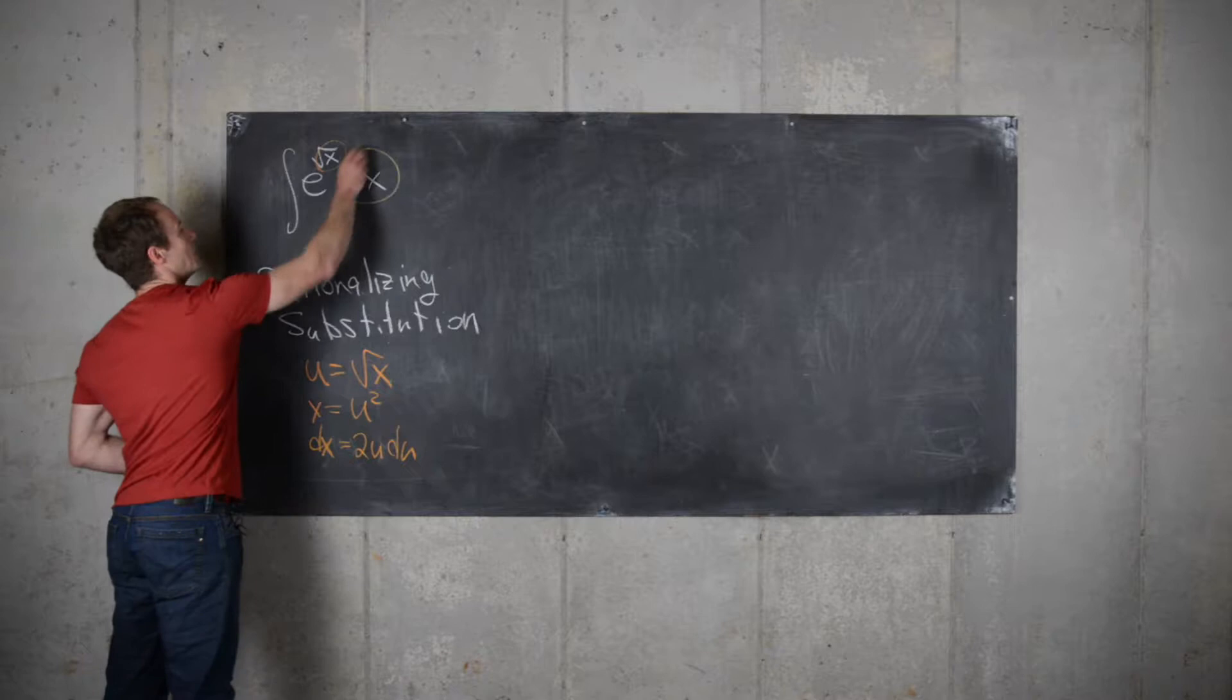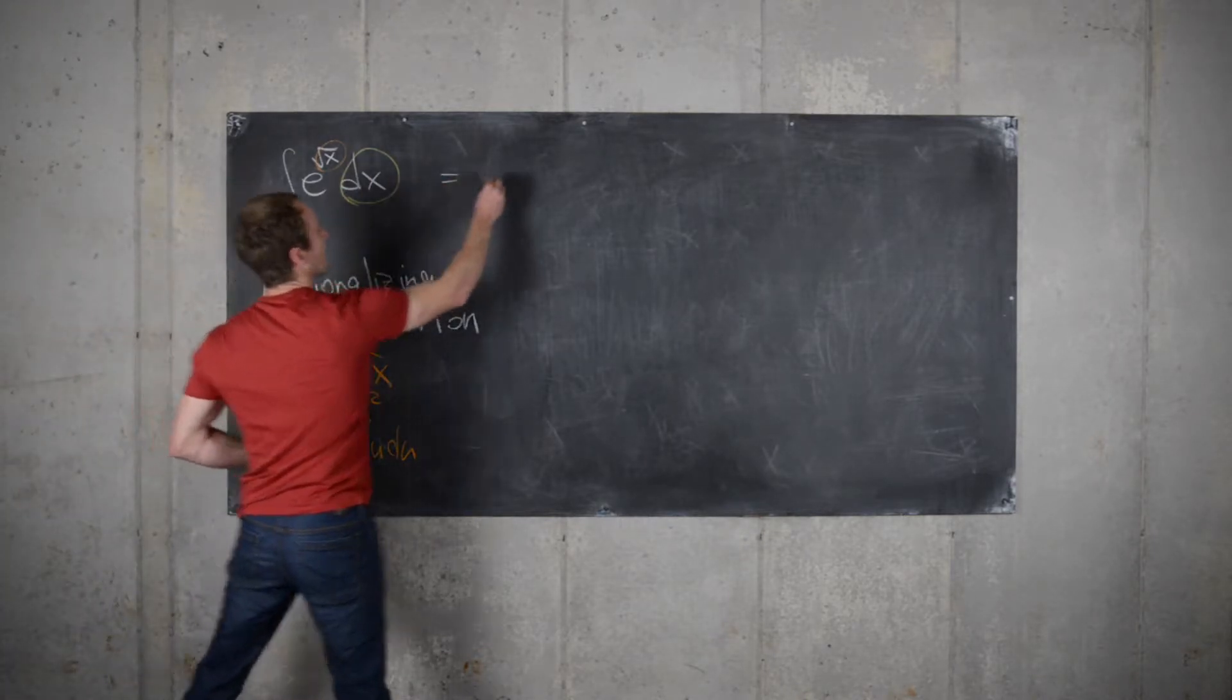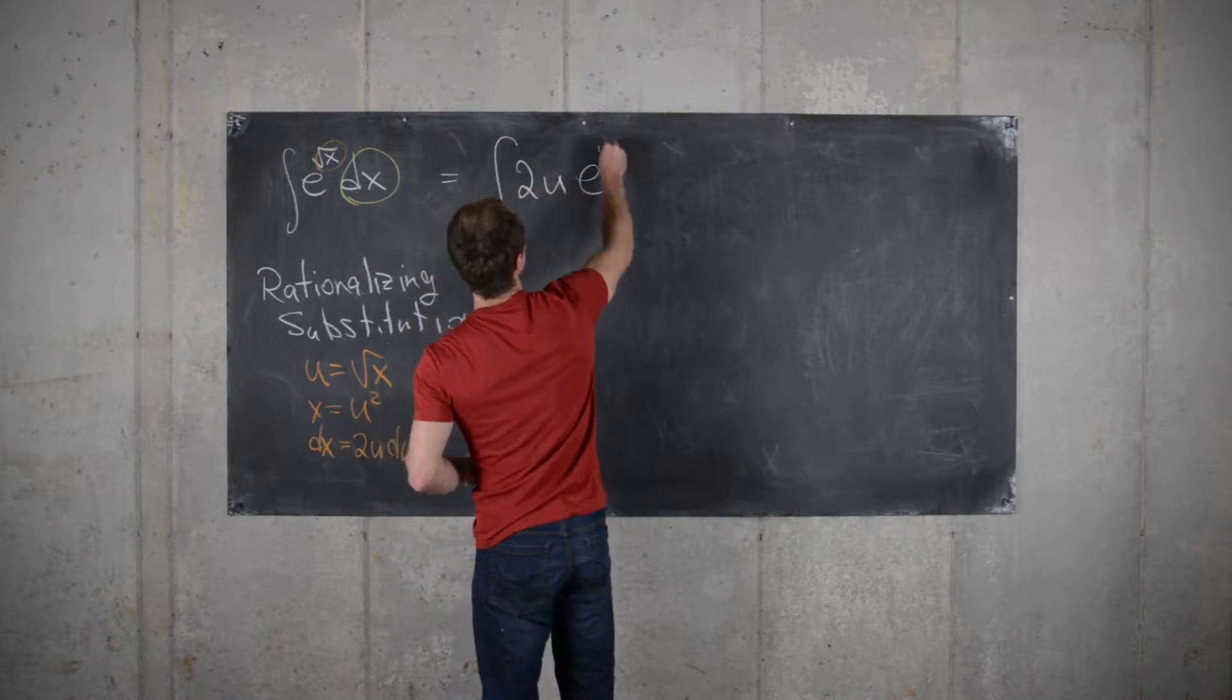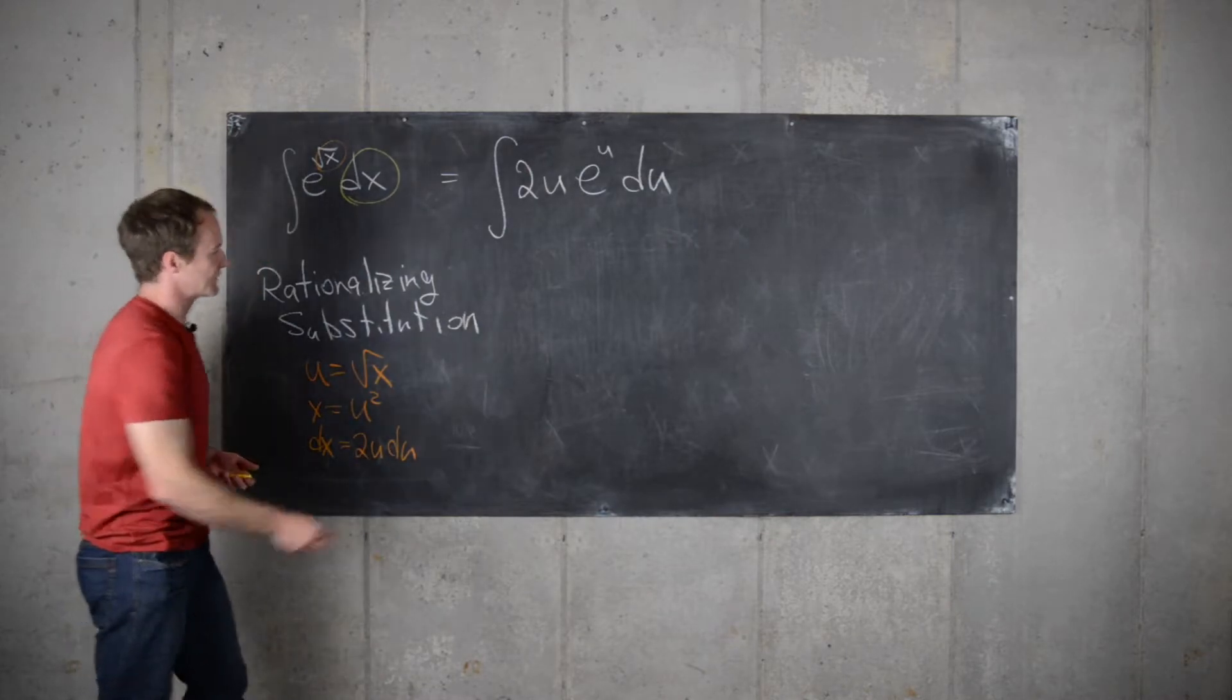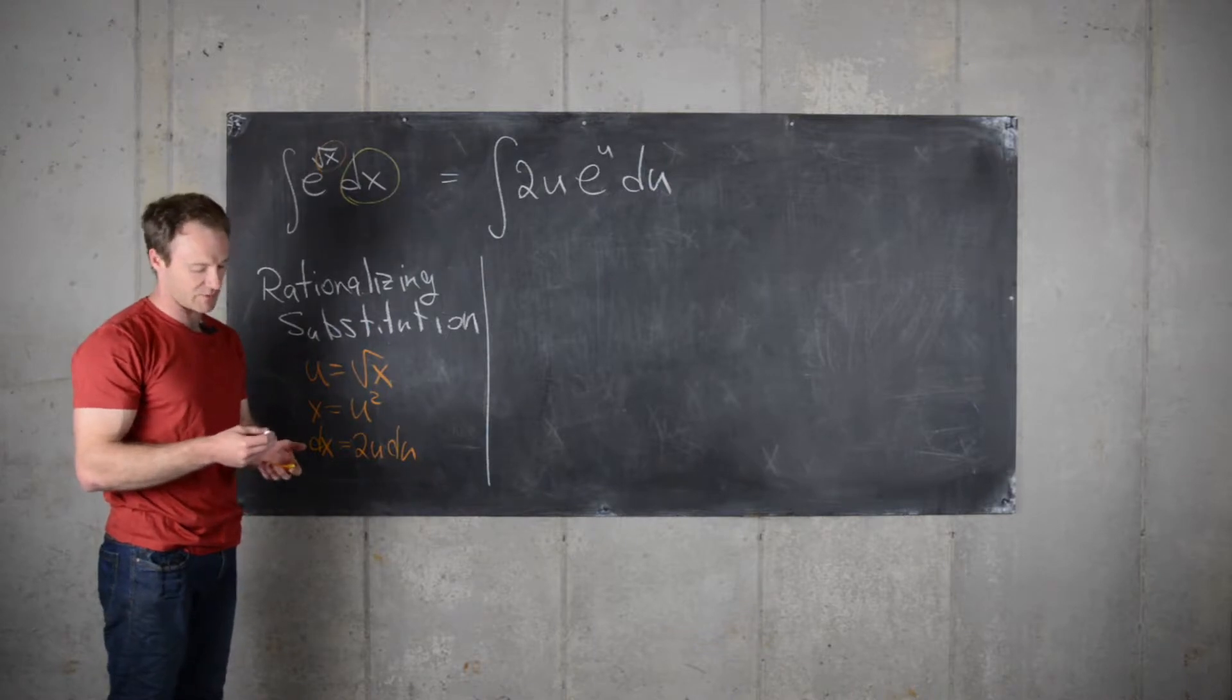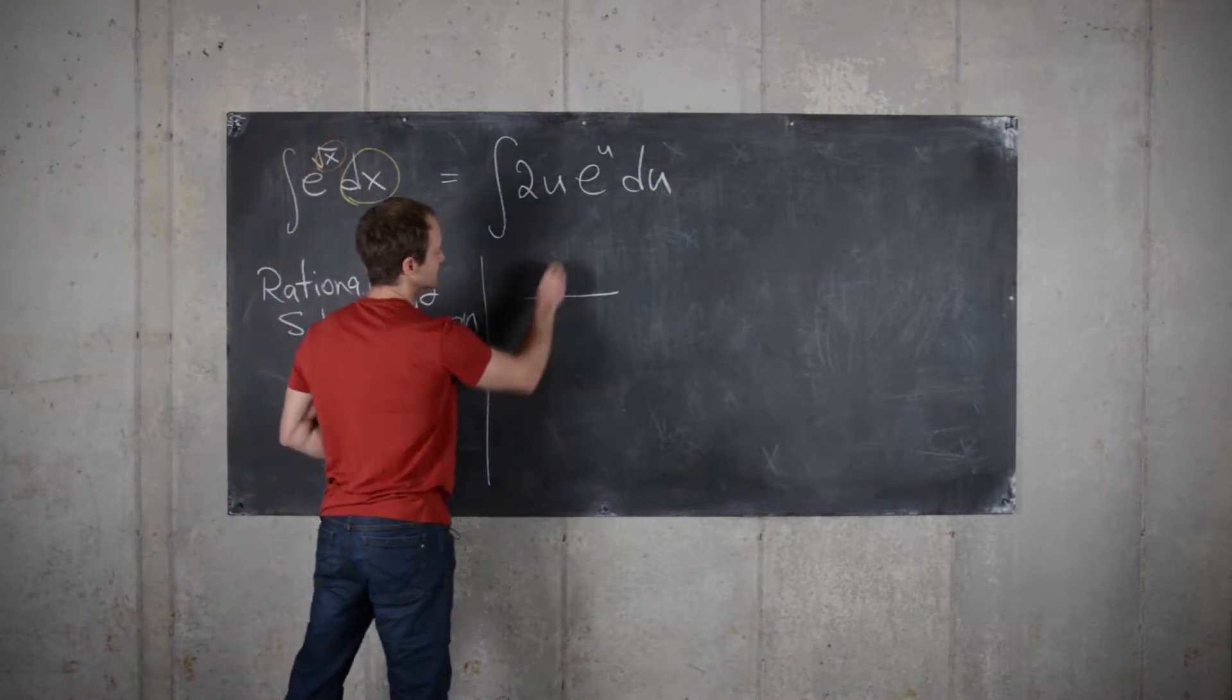And you see now we can take up both parts of the integral, which allows us to rewrite this as the integral of 2u e to the u du, which is a type of integral which is most easily solved with integration by parts. And so, we'll do that with the tabular method for integration by parts.